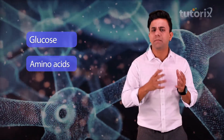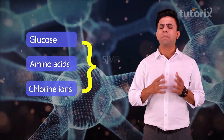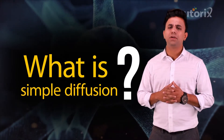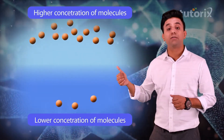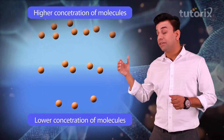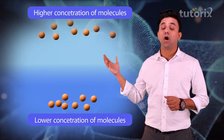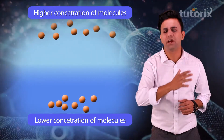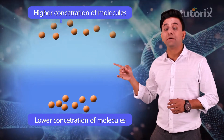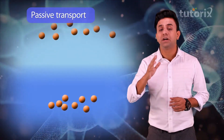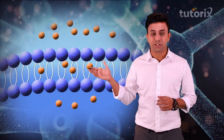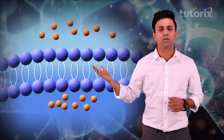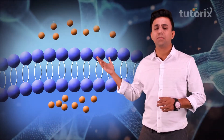A small amount of monosaccharides like glucose, amino acids, and some electrolytes like chlorine ions are absorbed by simple diffusion. Simple diffusion is the process by which substances move from their region of higher concentration to their region of lower concentration. This simple diffusion is a passive transport mechanism — it does not require ATP. Hence these molecules are absorbed into blood circulation by this passive mechanism of diffusion.